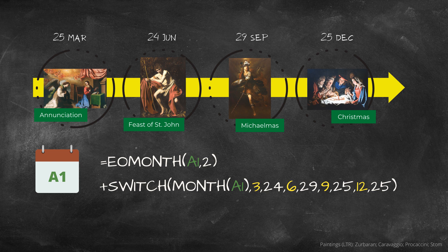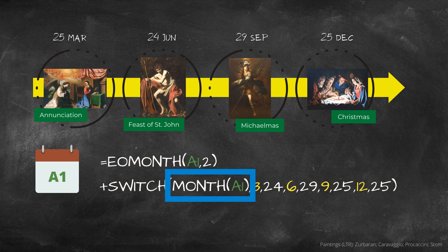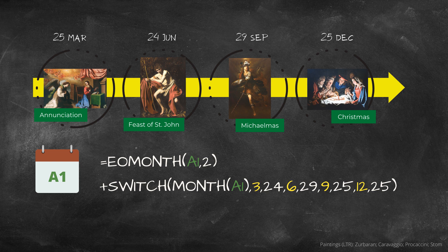This is why our EOMONTH plus SWITCH formula includes the MONTH function. The MONTH function returns the month as a number. For March, the MONTH function will return the number three. To demonstrate how the next quarter day function works, let's say the previous rent is the 25th of March 2021.